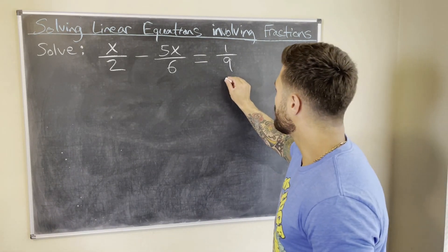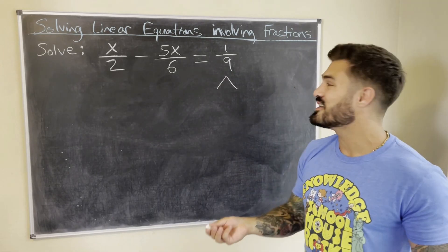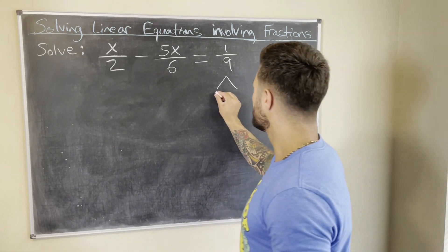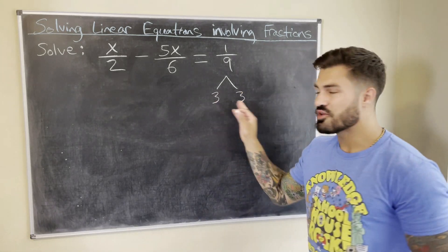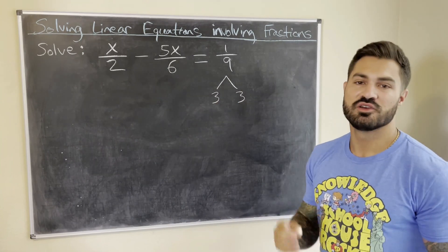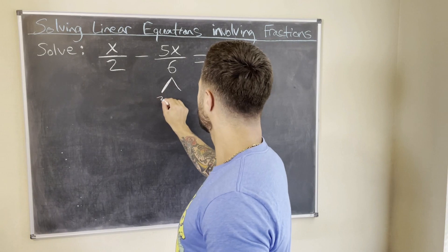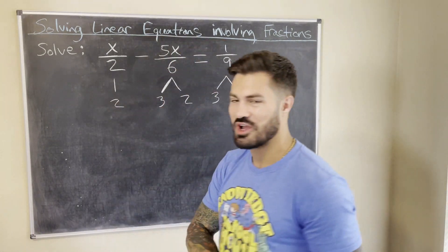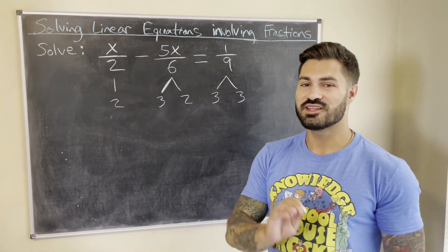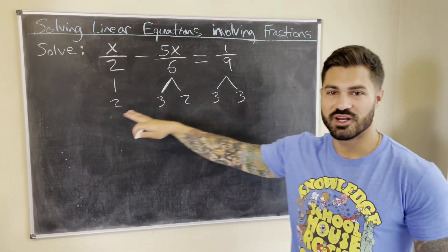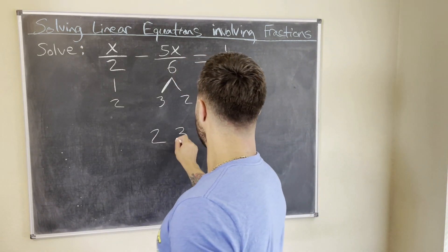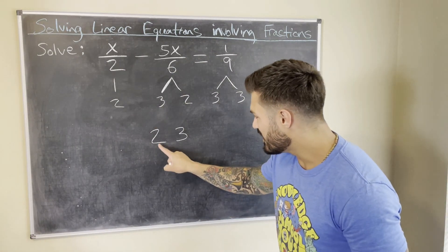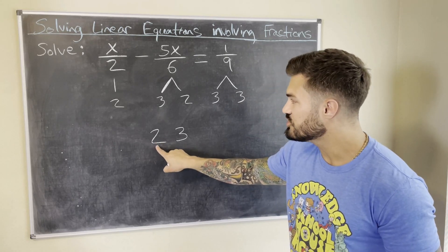We're going to do a prime factorization on each denominator by drawing a factor tree. For 9: break it into 3 and 3, both prime, so 9 equals 3 times 3. For 6: that's 3 times 2, both prime. And 2 just stays as 2. Now we identify all the unique prime factors that appear throughout these denominators — in this case those are 2 and 3.